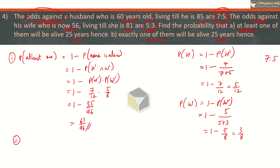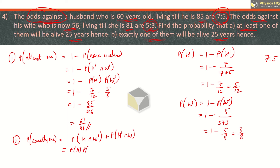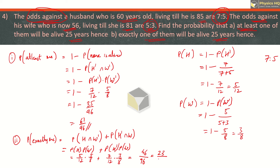The second case is a bit tricky — exactly one of them is alive. There are two cases: either the husband is alive and wife is not, or the husband is not alive but the wife is alive. So this equals P(H) times P(W dash) plus P(H dash) times P(W). Putting in the values with a common denominator of 96: the first term gives 25 and the second gives 21, totaling 46. Dividing by 2 gives us 23 by 48. This is the final answer.